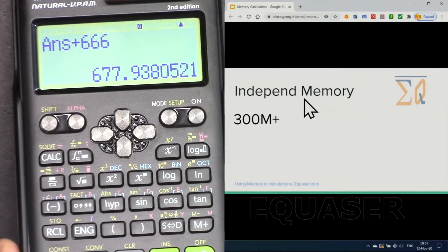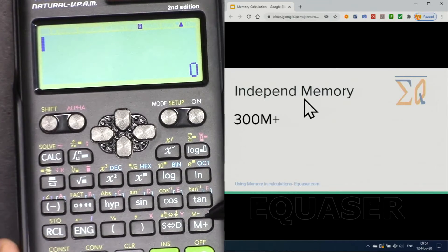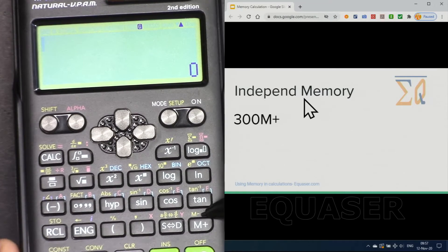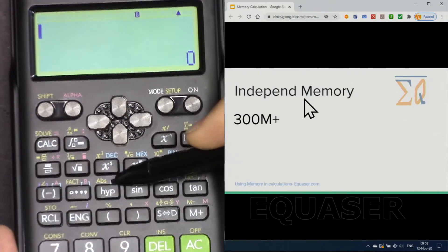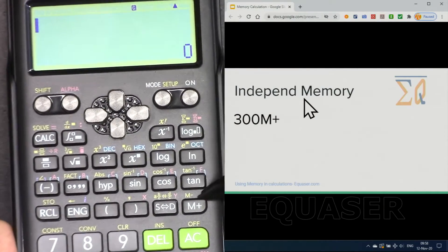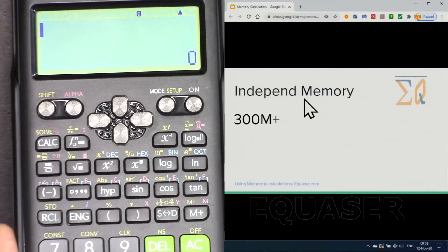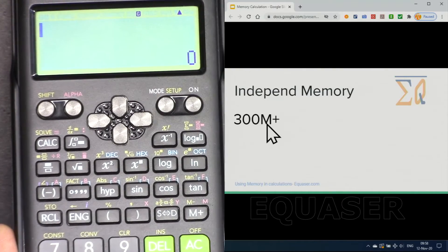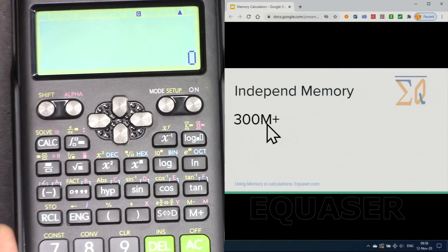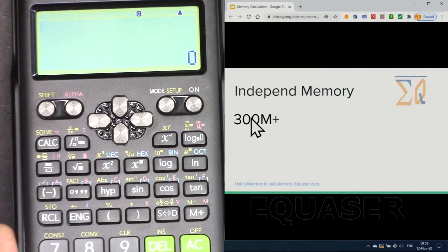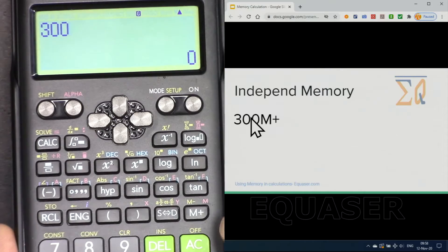And now let's look at the independent memory. Independent memory is such that you can add on top of it and add, but in these memories you would not do that, so you are just able to replace them. But here we can add and when we use independent memory there is an M on the screen telling us that there is a value so we know when we add something. Now let's put 300 into memory and just press M plus.